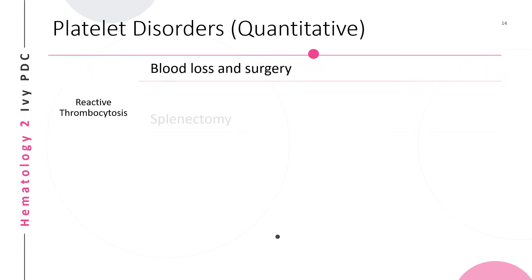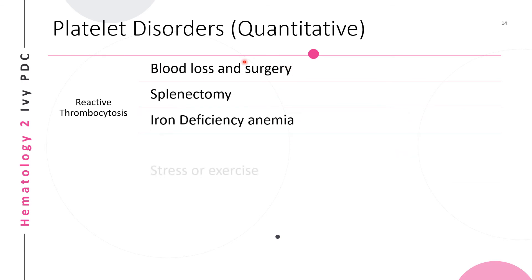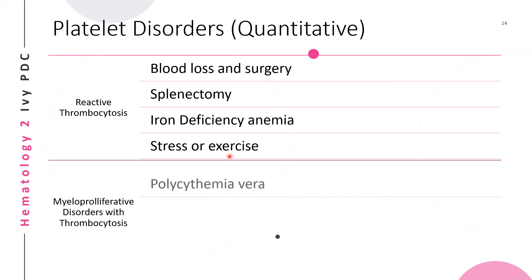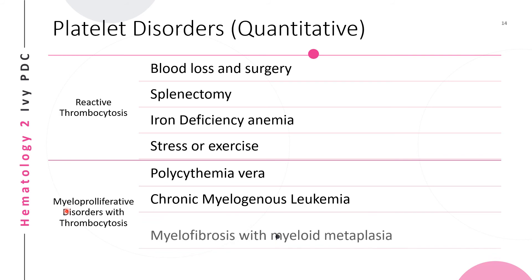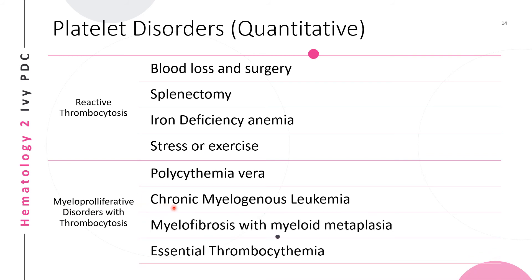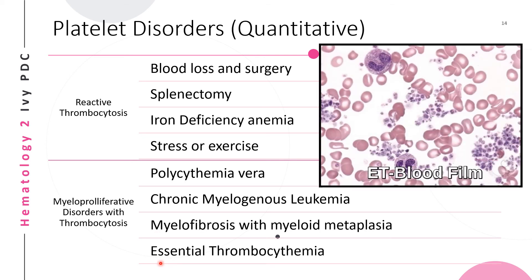Reactive thrombocytosis may be due to blood loss, surgery, splenectomy, iron deficiency anemia, or stress and exercise. Thrombocytosis may also be due to myeloproliferative disorders like polycythemia, chronic myelogenous leukemia, myelofibrosis with myeloid metaplasia, and essential thrombocytemia, which shows an increased number of platelets with variation in sizes on a blood film.